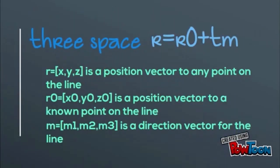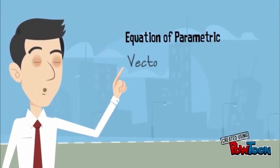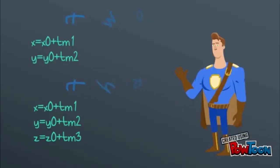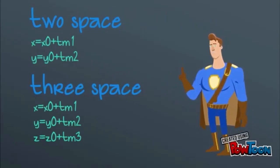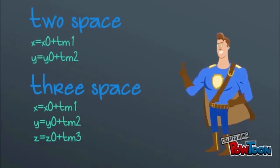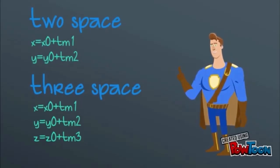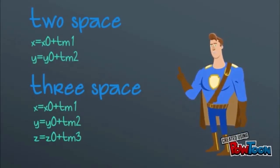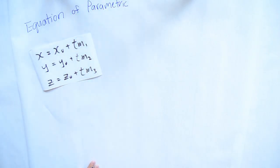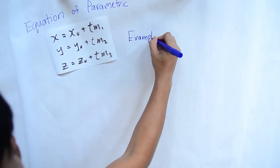For three-space, r equals bracket xyz, which is a position vector of any point on the line. r0 equals bracket x0, y0, z0, which is a position vector to known points on the line. m equals bracket m1, m2, m3, which is a direction vector of the line. The final parametric form for two-space is: x equals x0 plus tm1, y equals y0 plus tm2. For three-space: x equals x0 plus tm1, y equals y0 plus tm2, z equals z0 plus tm3.